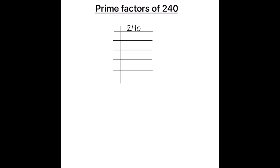Since this number is an even number, we can divide it fully using the number 2. 2 is a prime number. We can divide 240 by 2 to get 120. Again we can divide 120 by 2 to get 60. 60 is also even.